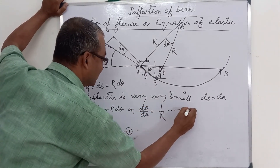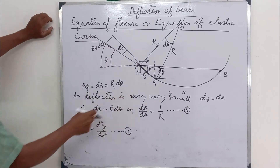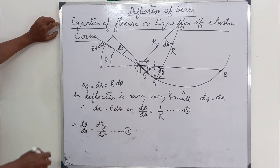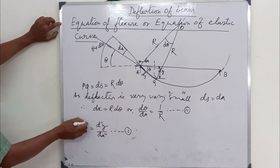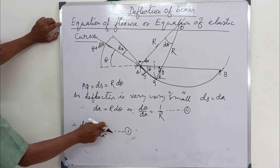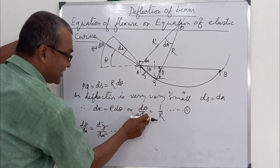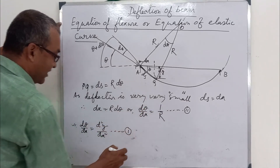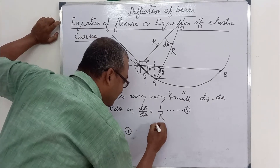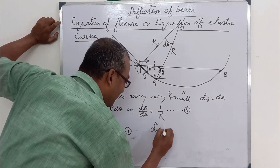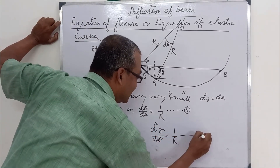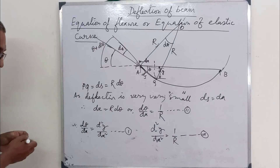From equations one and two: d theta/dx equals d²y/dx² and d theta/dx equals 1/R. Therefore, combining them gives equation three: d²y/dx² equals 1/R.